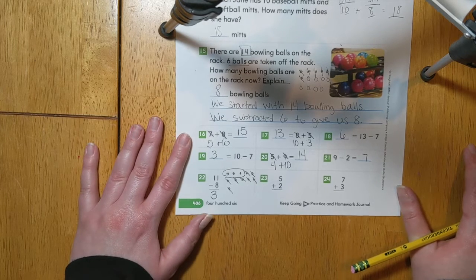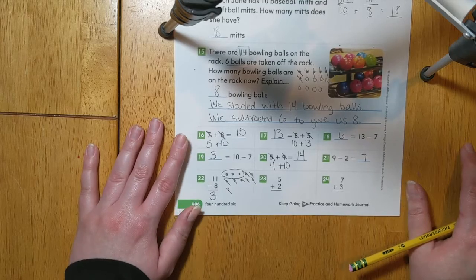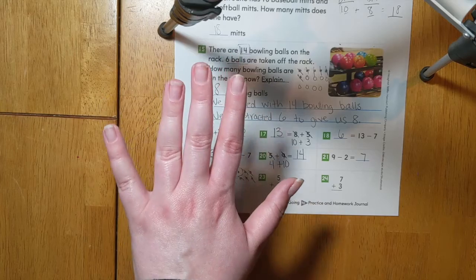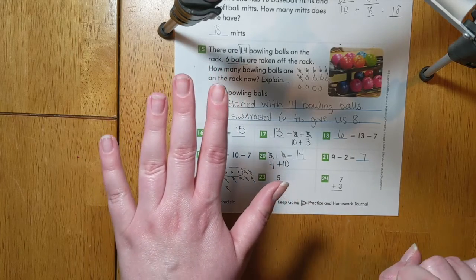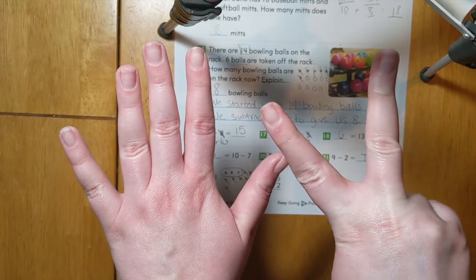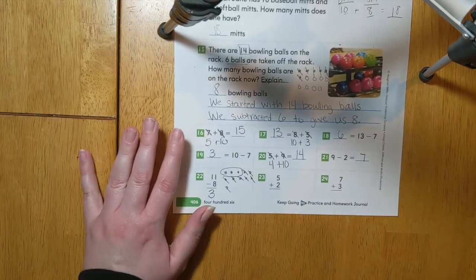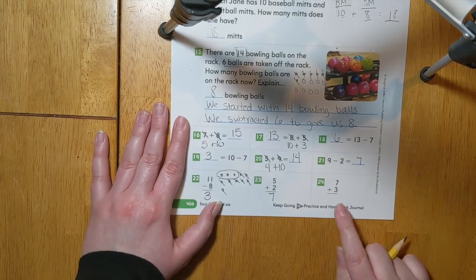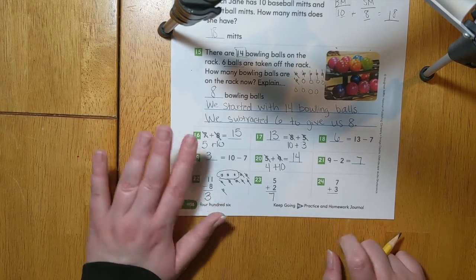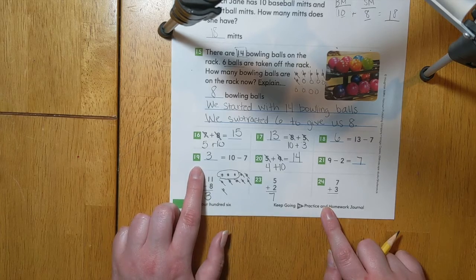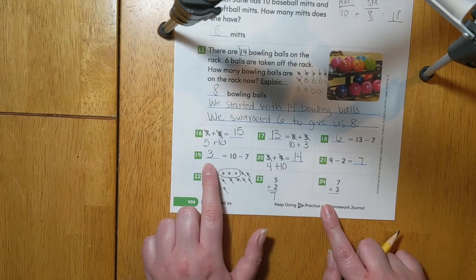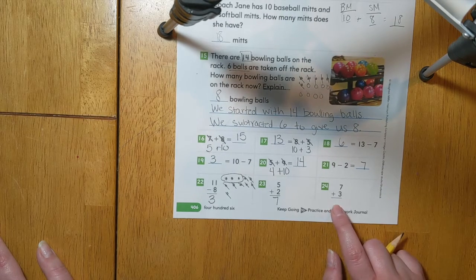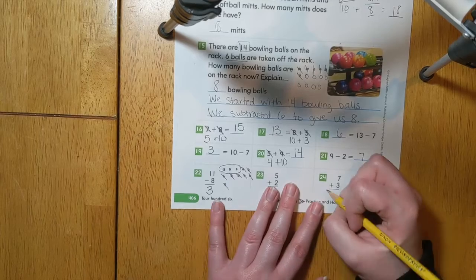For number 23, we are going to add 5 plus 2. If I have 5 and I add 2 more, I can count on 5, 6, 7. So 5 plus 2 equals 7. Last, we have 7 plus 3. We can use number 19 to help us. We talked about that 3, 10, and 7 are all part of a fact family. So I know that 7 plus 3 equals 10.